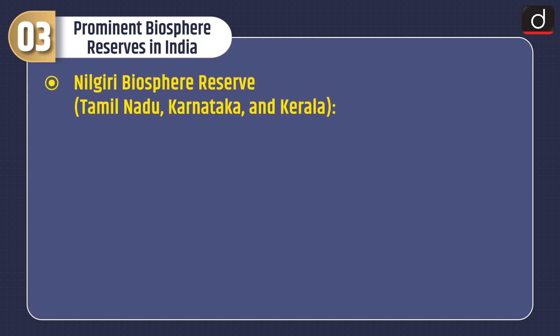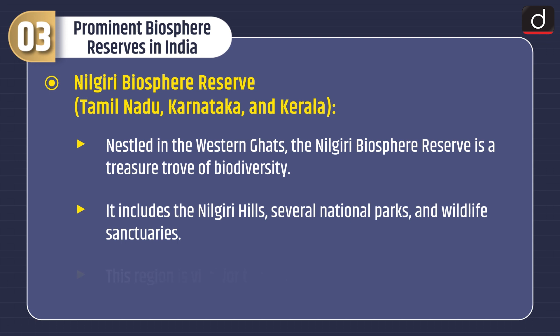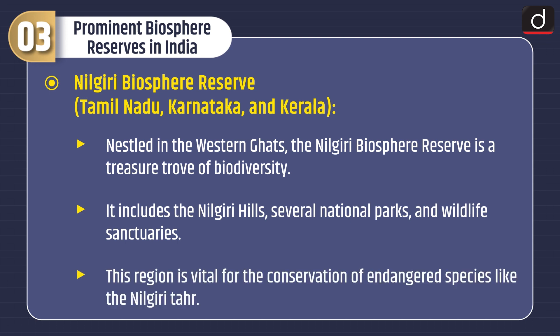The second one is the Nilgiri Biosphere Reserve, covering Tamil Nadu, Karnataka, and Kerala. Nestled in the Western Ghats, the Nilgiri Biosphere Reserve is a treasure trove of biodiversity. It includes the Nilgiri Hills, several national parks, and wildlife sanctuaries. This region is vital for the conservation of endangered species like the Nilgiri Tahr.